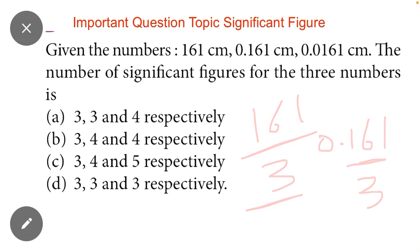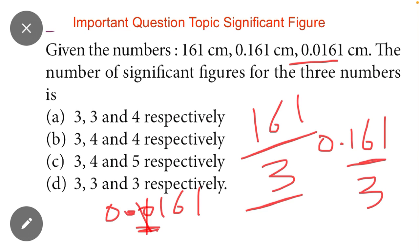And the last option is 0.0161. Keep in mind, the zeros after the decimal point are not counted, are not considered as significant figures. It means this zero is not present in the significant list. So there are just three significant figures.